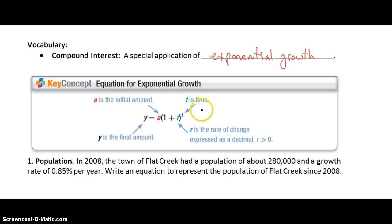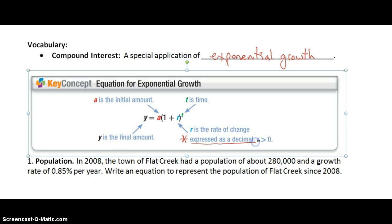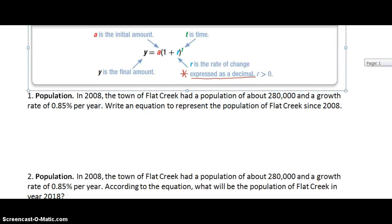T is the time so that's how long the growth happens and R is the rate of change. It's really important that we remember to express this as a decimal because they may give it to us as a percent but we need to change it to a decimal. So let's take a look at our first example.